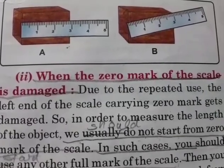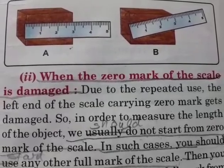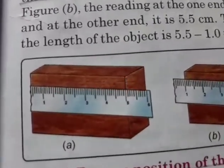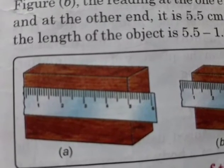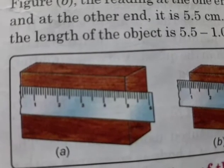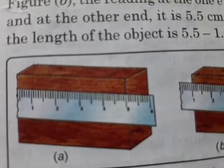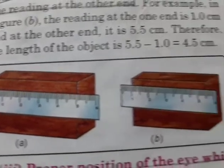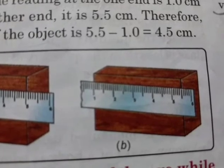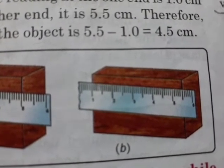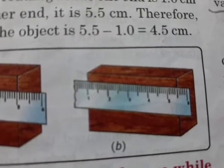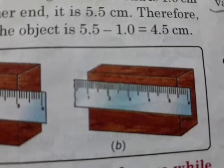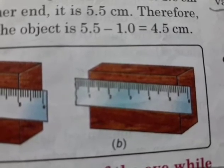The next precaution is when the zero mark of the scale is damaged. As you can see in the figure, the left end of the scale has been damaged. In such a case, don't start from zero — start from one. If your observation comes to 5.5 and you started from one and not from zero, then the length will be 5.5 minus 1, which equals 4.5.